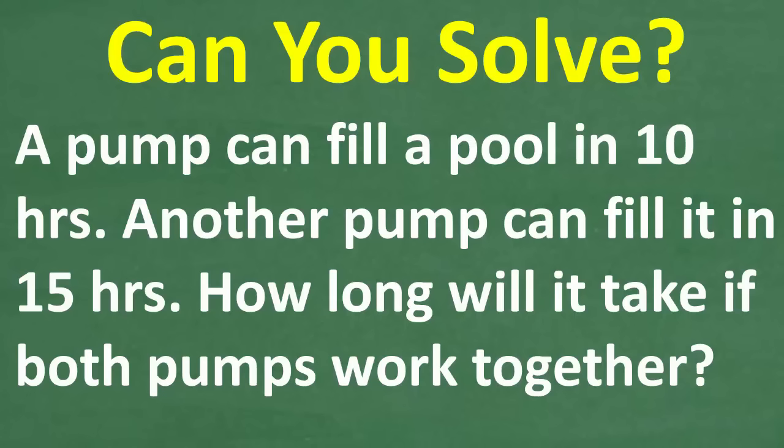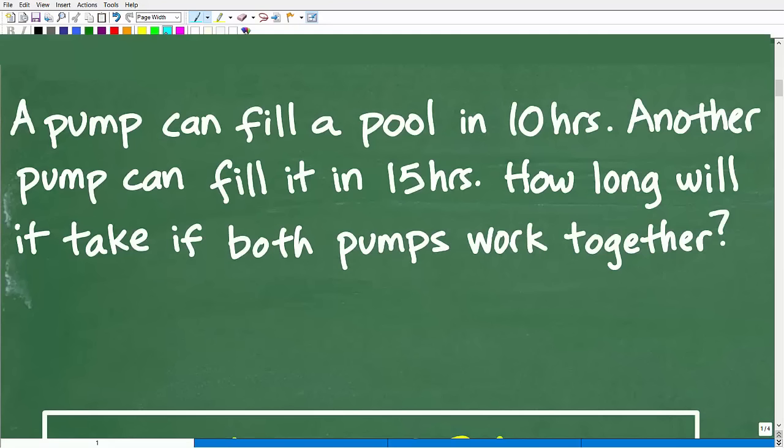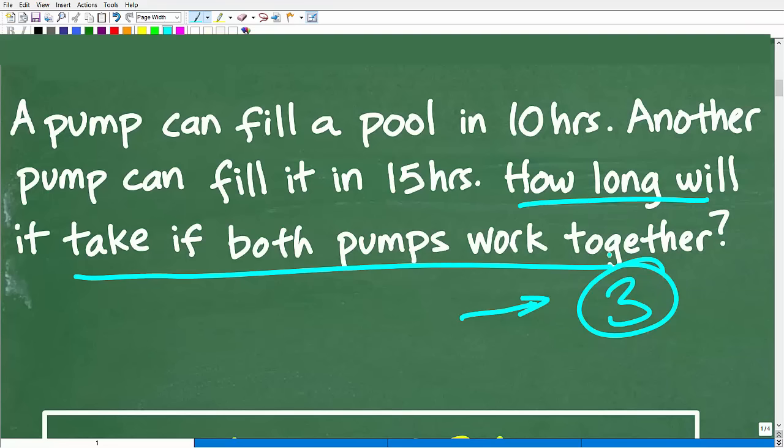The first thing we need to do is just take a look at the problem and make sure we use the rule of three, which is always read a problem at least three times before you do anything. Once you read a problem at least a few times, a minimum of three times, you understand what the question is. And the question is, how long will it take if both pumps work together?